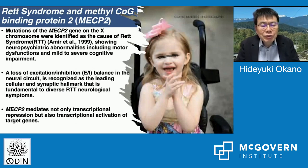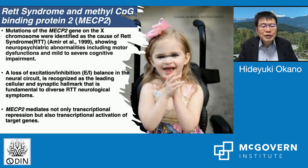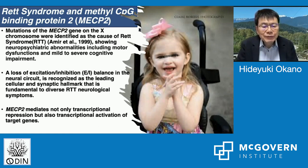As an example today, I'm going to talk about recent results on the Rett syndrome model. Mutations in the MeCP2 gene on the X chromosome are identified as the cause of Rett syndrome, showing neuropsychiatric abnormalities including abnormal motor dysfunction and mild to severe cognitive impairment. The excitation-inhibition balance in the neural circuit is recognized as a leading cellular and synaptic mechanism fundamental to diverse Rett neurological symptoms.